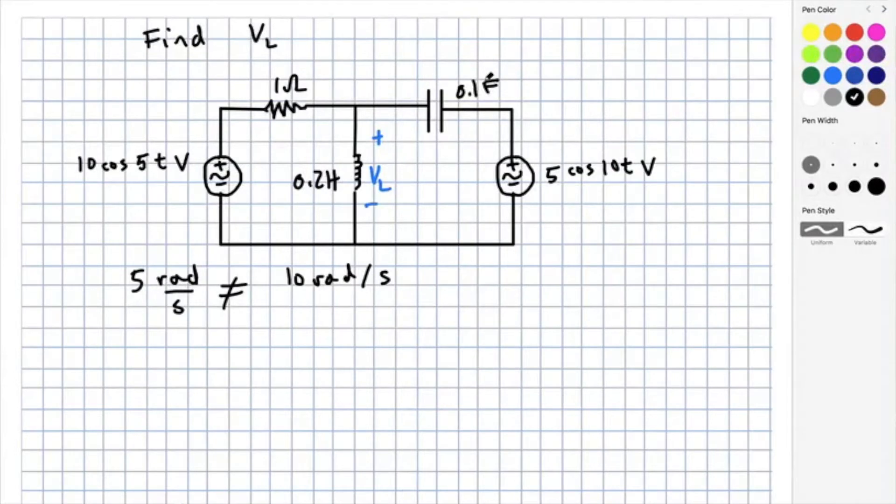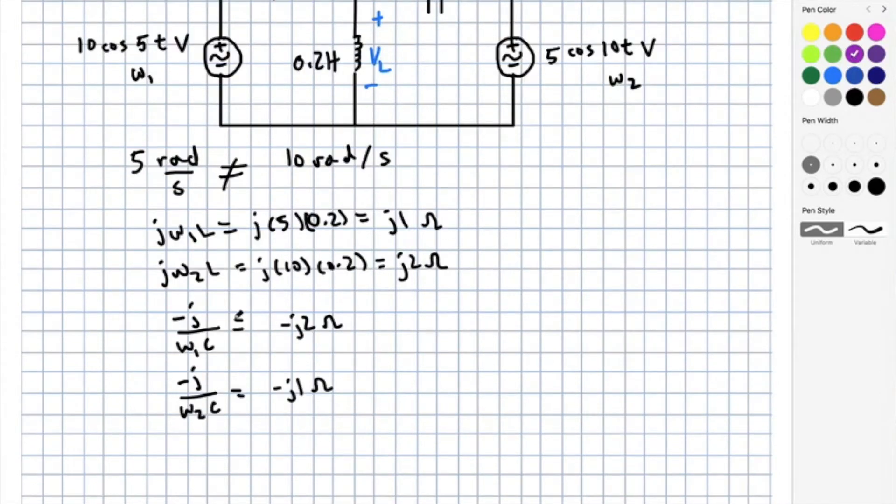In this example, I would like to find the voltage across the inductor. What I immediately notice is that I have two sources, one of which having a frequency of 5 radians per second and the other having a frequency of 10 radians per second, which are clearly not the same. For the first frequency, J omega 1 L is equal to J 1 ohms. For the second frequency, the impedance across the inductor is J 2 ohms, which are not the same. Similarly, for the capacitor, for the first frequency, we get negative J 2 ohms, and for the second frequency, we get negative J 1 ohms.